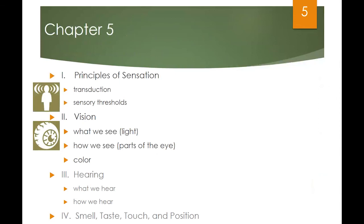I hope you enjoyed this chapter on sensation and perception. We covered the difference between sensation and perception, vocabulary terms like transduction, absolute threshold, and difference threshold, as well as the parts of the eye — the protective cornea, the pupil, the iris, the retina — and the difference between rods and cones. Cones help you see color; rods help you see in the dark. Thanks so much for listening. I'm Professor G, and I hope to see you in the classroom.